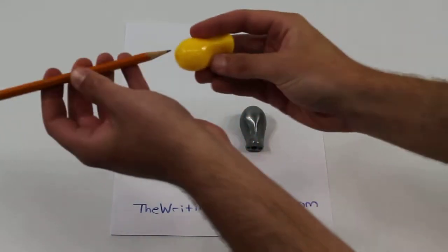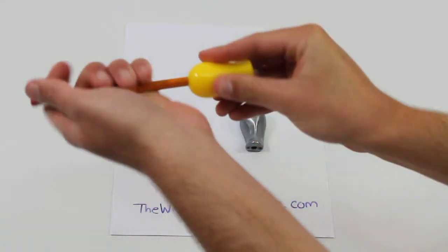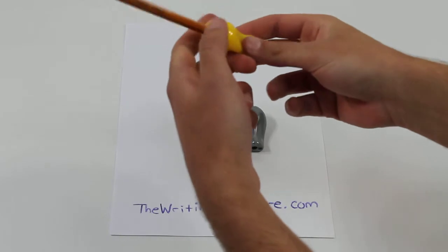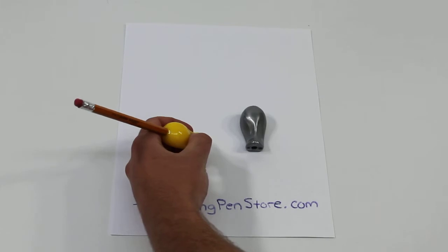This grip easily slides onto a number two pencil or pen or similar writing device. You then put your finger on the back, index finger, thumb and it helps promote the tripod grip.